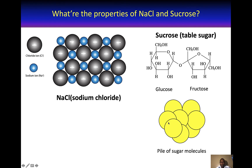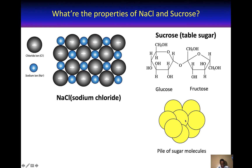Let's compare the particle model of sucrose to the particle model of sodium chloride. When you look at the particle model of sodium chloride, you notice that it consists of plus and minus ions. But when you look at the particle model of sucrose, you notice that it consists of just circles with no plus or minuses. This means that sucrose molecules are neutral, while sodium chloride units consist of sodium and chloride ions.